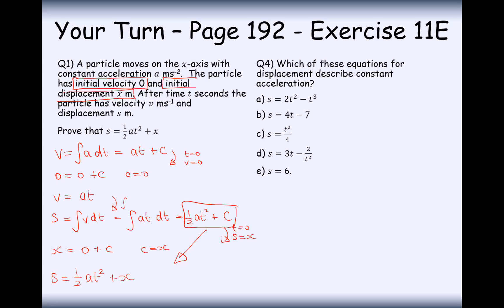For question 4 here, which of these equations for displacement describe constant acceleration? The only way we can find that out is if we double differentiate. So in this case here, it will equal 4 T minus T squared. And differentiate again, and we get 4 minus 2 T. Now is that constant acceleration? No, because as time changes, acceleration changes. So no, this one is not constant acceleration.